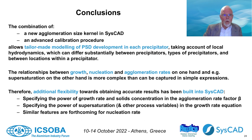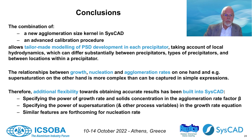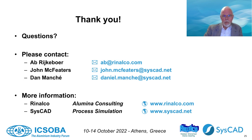Conclusions. The combination of a new agglomeration kernel in CISCAP with an advanced calibration procedure allows tailor-made modeling of PSD development in each precipitator. The relationships of growth rate, nucleation rate, and agglomeration rate with, for instance, supersaturation, are more complex than can be captured in simple expressions. For that reason, additional flexibility has been built into CISCAP that allows the user to specify exponents of important variables in expressions according to the outcome of sensitivity studies per individual precipitator. Default values are provided for a start. These are very recent developments in CISCAP, for which some aspects are still in the implementation stage. And this concludes my presentation. Thank you.